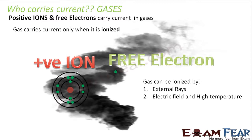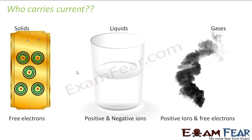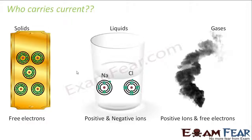So now you understand who carries current in any substance. In case of a conductor — that is, in case of a metal — free electrons carry current. In liquids, it is positive and negative ions who carry current. In gases, it is positive ions and free electrons who carry current. So this is the comparison between solids, liquids, and gases: solids have free electrons; liquids have positive and negative ions; and in case of gases, you have positive ions and free electrons.